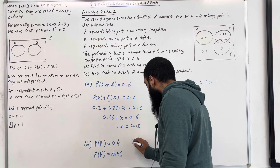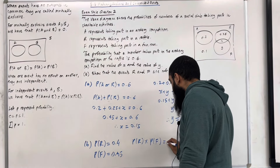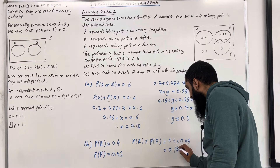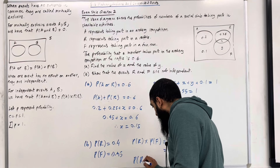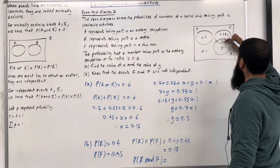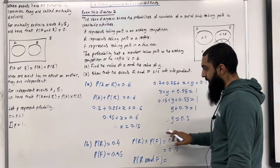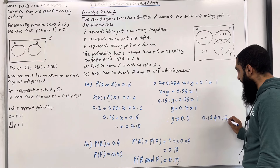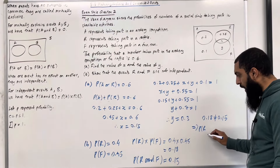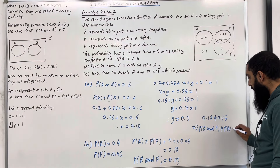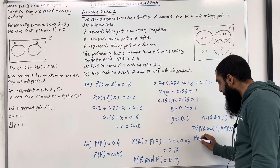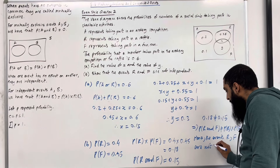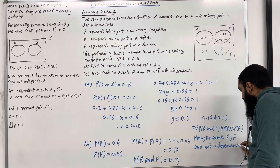The next step is to work out probability of R multiplied by probability of F. We have 0.4 multiplied by 0.45, which gives 0.18. The probability of R and F — the overlap between R and F — is X, which equals 0.15. Since 0.18 is not equal to 0.15, this implies that probability of R and F is not equal to probability of R multiplied by probability of F. Hence the events R and F are not independent, as required.